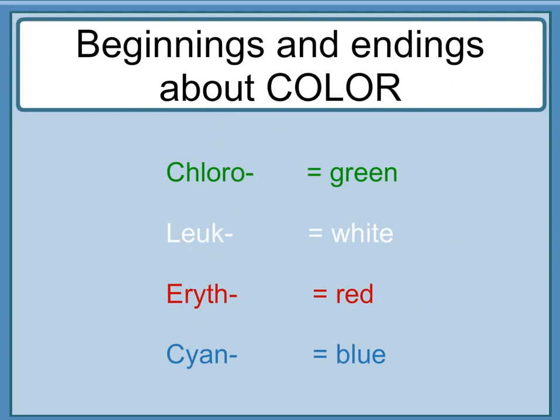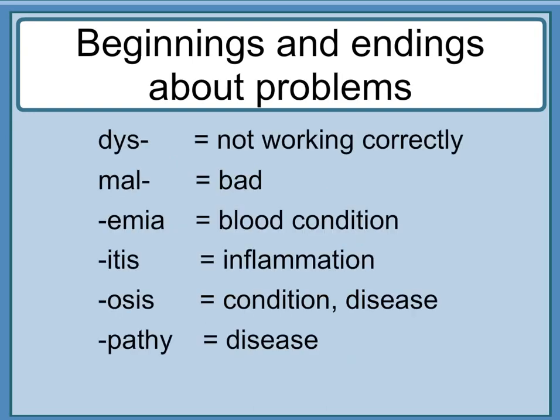Beginnings and endings about color: 'chloro-' equals green; 'leuk-' equals white; 'erythr-' equals red; 'cyan-' equals blue. Beginnings and endings about problems: 'dys-' equals not working correctly; 'mal-' equals bad; '-emia' equals blood condition; '-itis' equals inflammation; '-osis' equals condition or disease; '-pathy' equals disease.